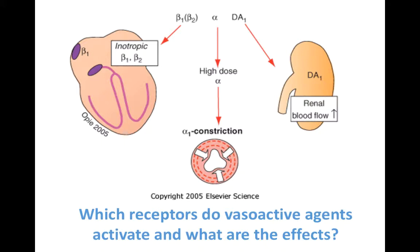Alpha receptors, when stimulated, cause vasoconstriction, which helps to increase blood pressure by increasing systemic vascular resistance. Dopamine-1 receptors mostly act on the kidneys and increase renal blood flow.